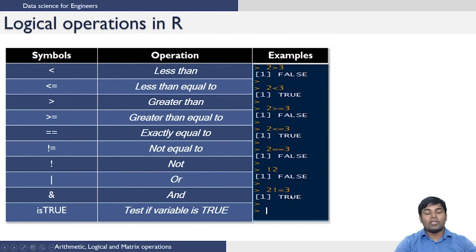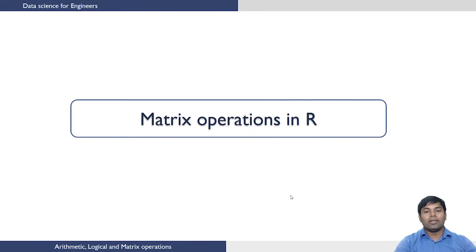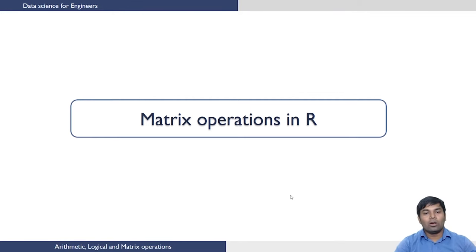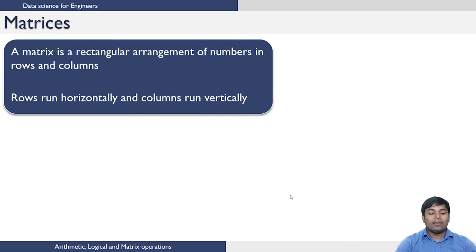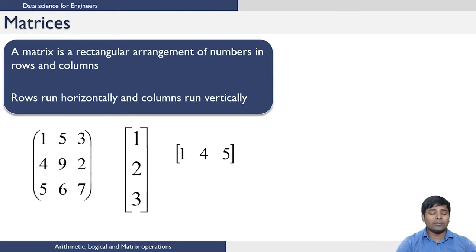This is the summary of logical operations that can be performed in R. Next we move on to the important class of operations needed for data analysis problems. Most of the data we will treat as matrices, so matrix operations play a key role while solving data analysis problems. A matrix is a rectangular arrangement of numbers in rows and columns. Rows are the ones which run horizontally and columns are the ones which run vertically. These are examples of matrices — one has three rows and three columns, one has three rows and one column, and one has one row and three columns.